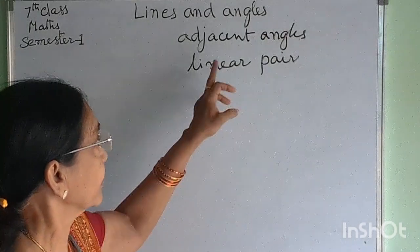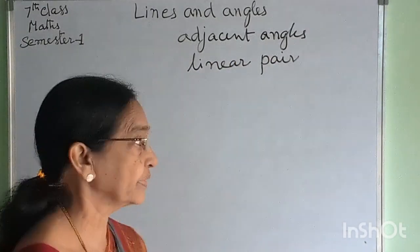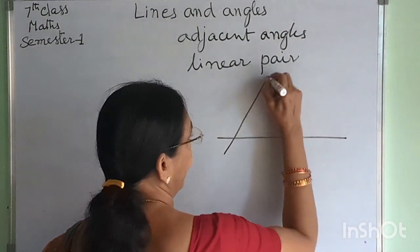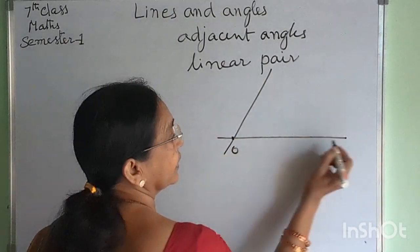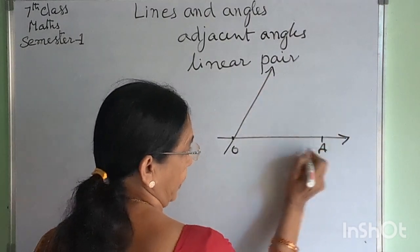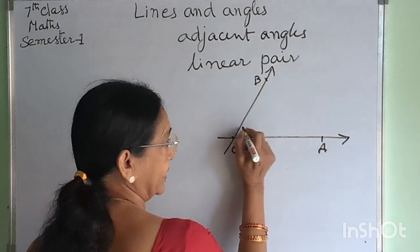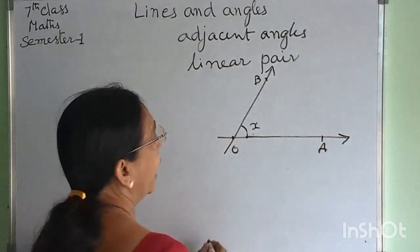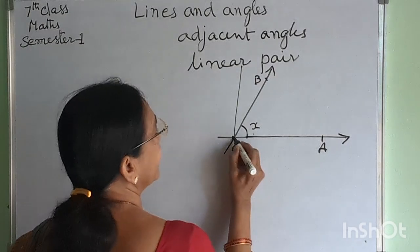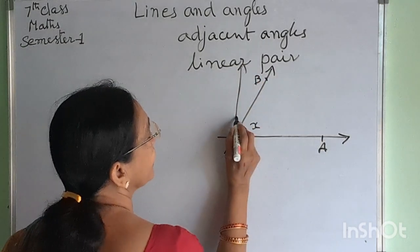Today we will learn about adjacent angles and linear pair. Suppose two rays meet at a point O. This is one ray OA and another ray OV. This forms an angle. Another ray is passing through the same point O and forms another angle.